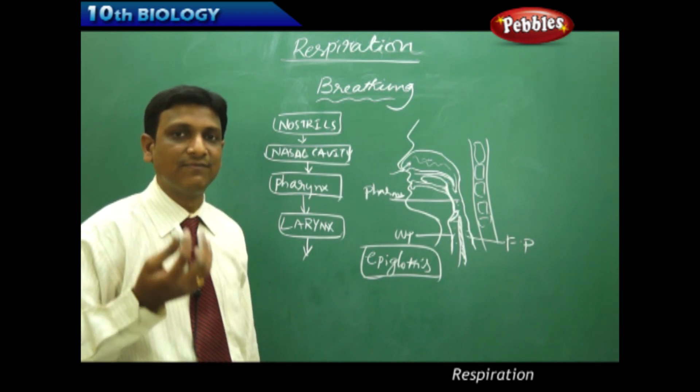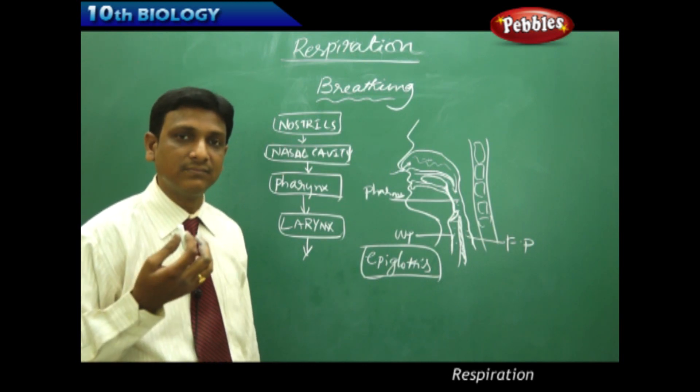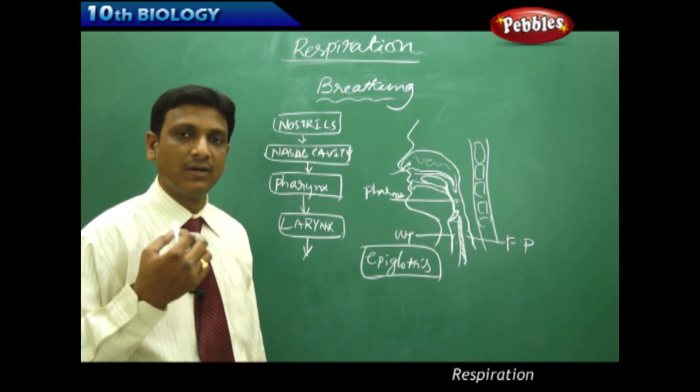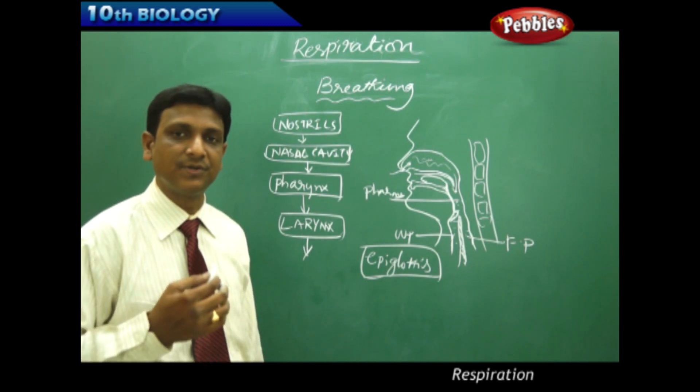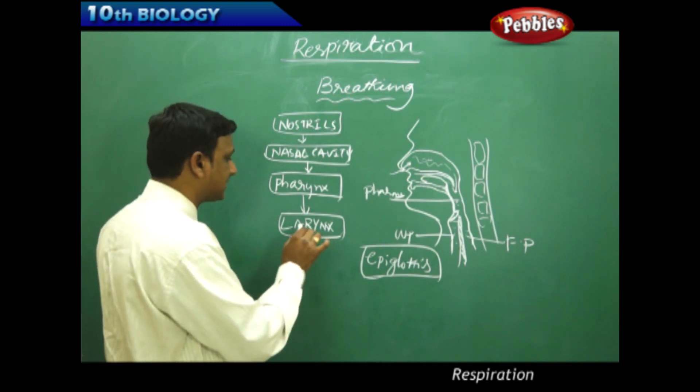These vocal cords vibrate because of the exhaled air. Because of the vibrations, we are able to produce various sounds like speech or songs, or we can make different kinds of sounds. That is because of the vibration of these vocal cords, which are present in the larynx.